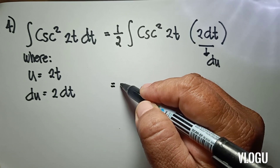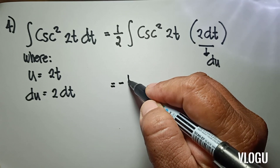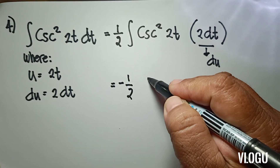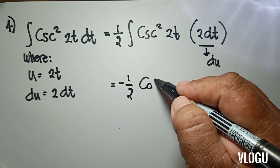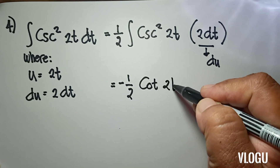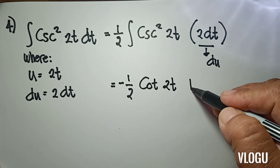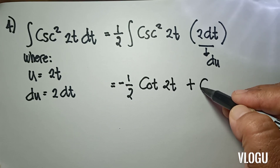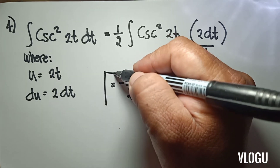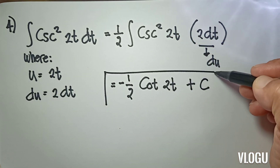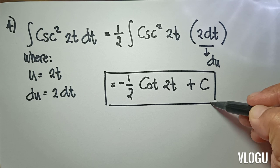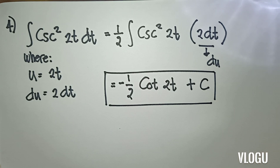So our answer is equivalent to negative 1/2 cotangent(2t) plus c. This is now our final answer.